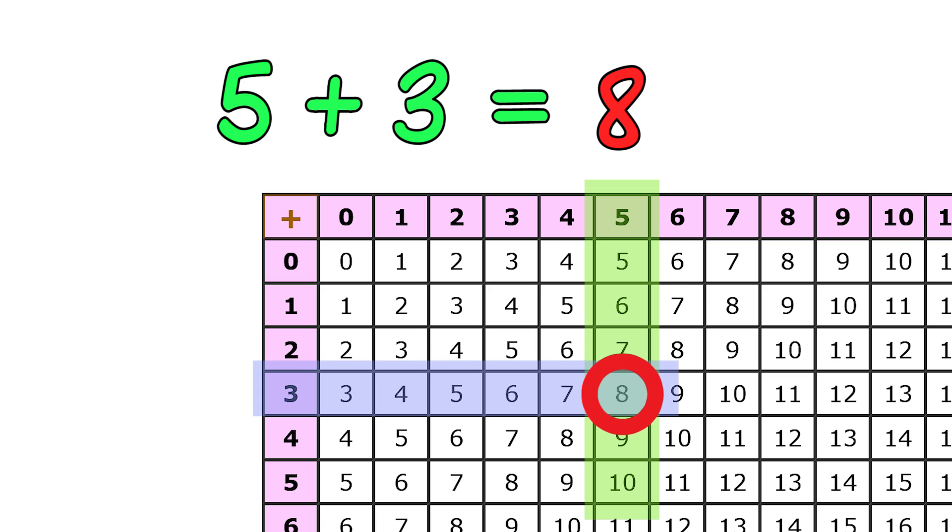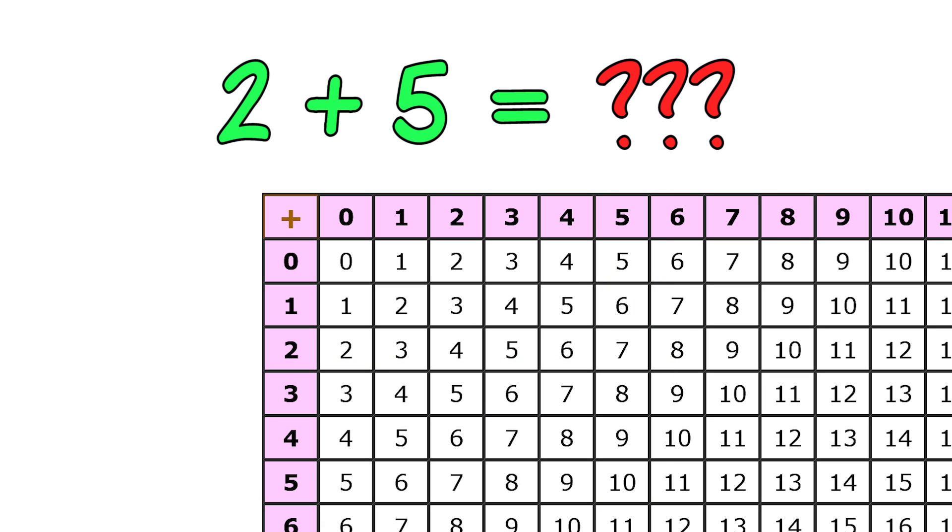Let's try another. Find the answer to two plus five. Find the number two along the top and five along the side. Where they meet is seven. Your answer? Two plus five equals seven.